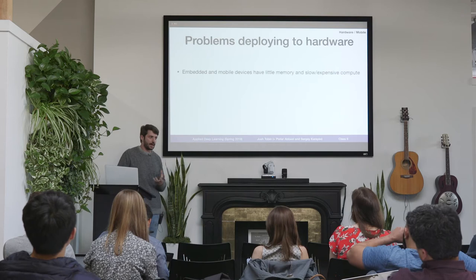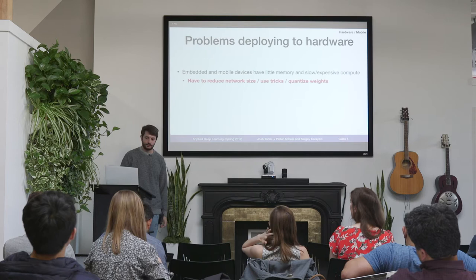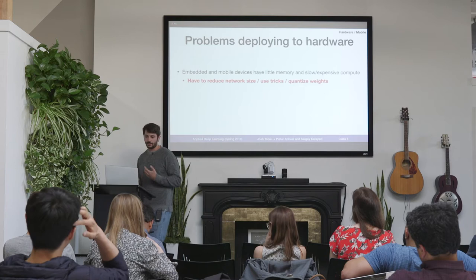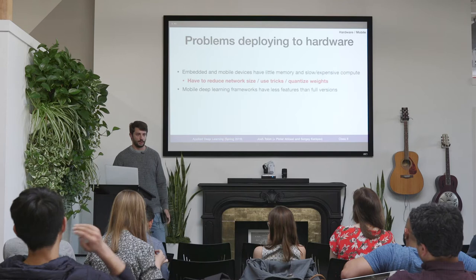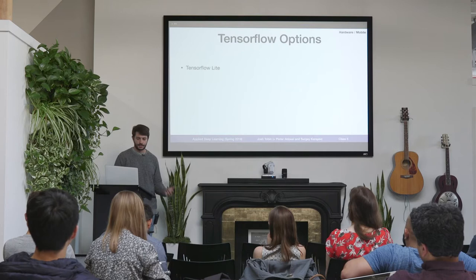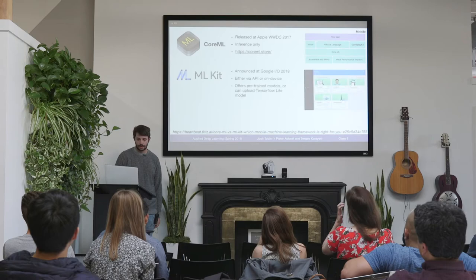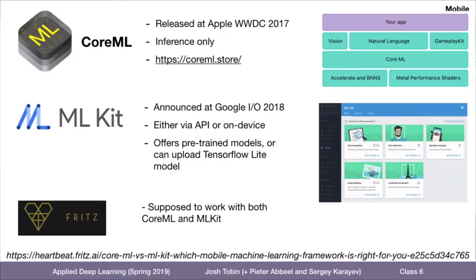What about deploying to hardware? The core challenge is that your cell phone does not have the same amount of processing power as a server, so you often have to use a bunch of tricks. Sergey talked about some of them to reduce the size of your network and maybe quantize the weights. Another challenge is that the frameworks people use on mobile are less full-featured, so you might need to choose your model architecture specifically to run on mobile. There are a few options in TensorFlow: TensorFlow Lite and TensorFlow Mobile, plus more hardware-specific platforms from Apple, Google, and Fritz.